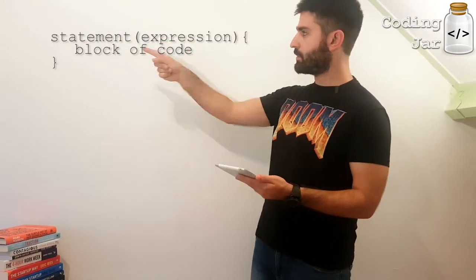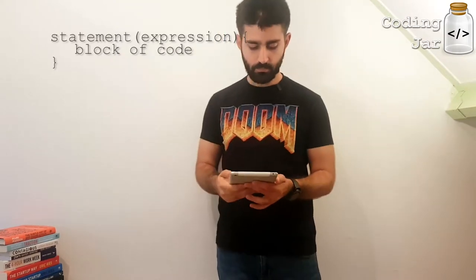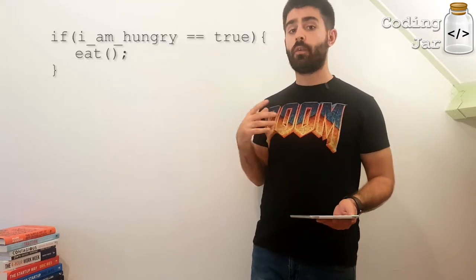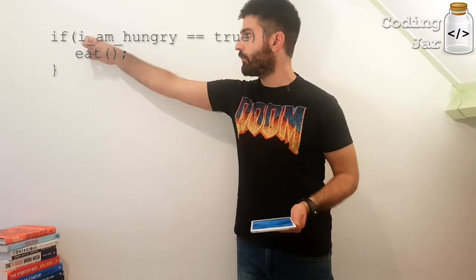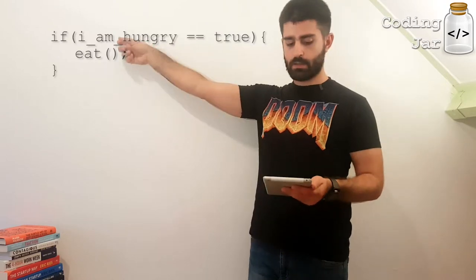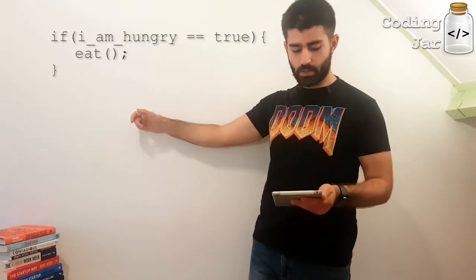So we have the statement, the expression which is the control, and the block of code. So let's go with if. If I am hungry, then I will eat. So the statement is if parenthesis something, block of code, execute this block of code.